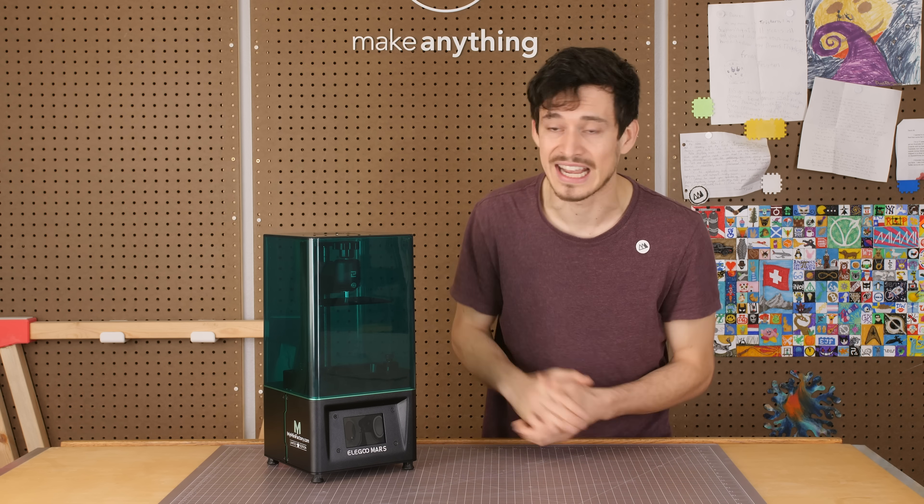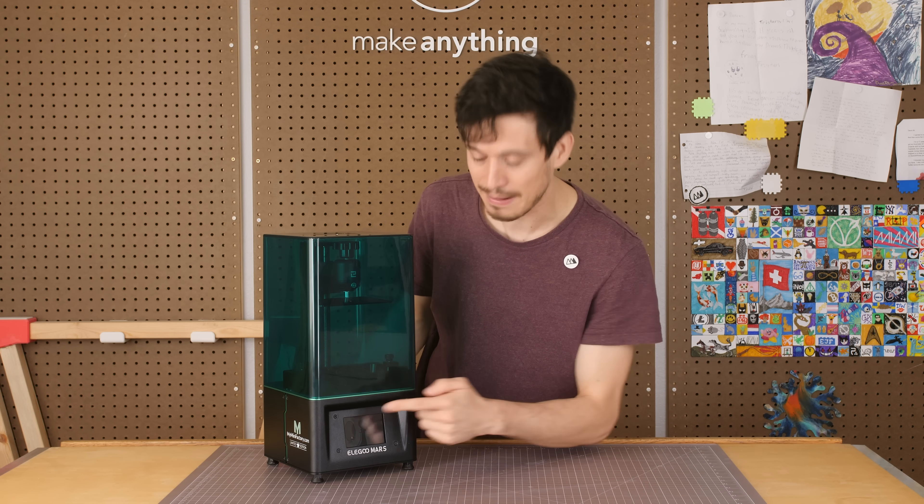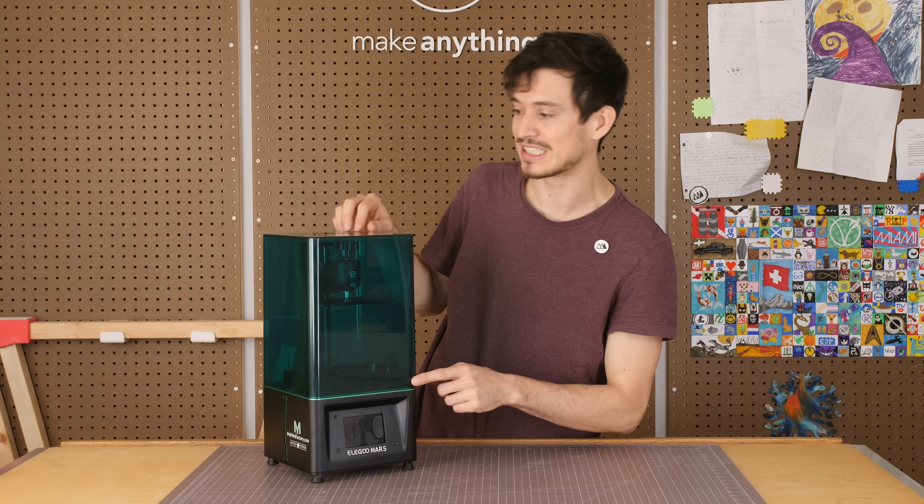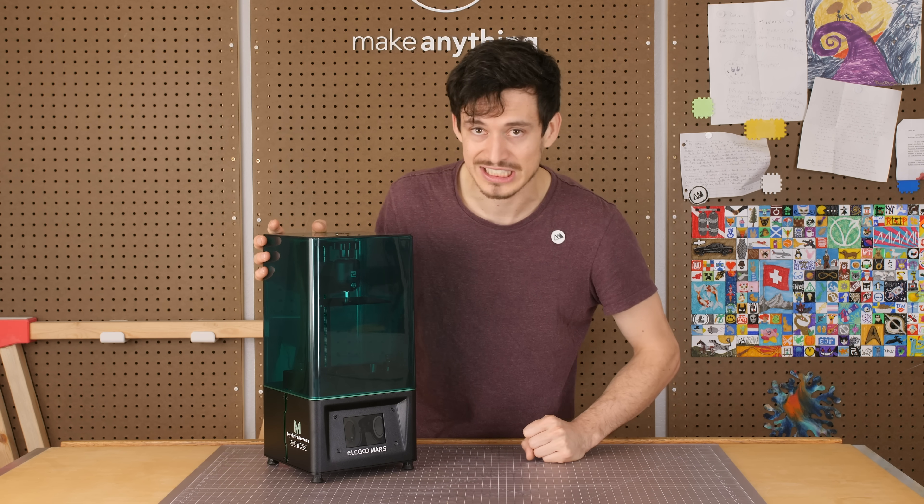It's Devin here with Make Anything and this is the Elegoo Mars Resin Printer My Mini Factory Edition. That's why it's got this cool green color. That's a little special edition flare for you.